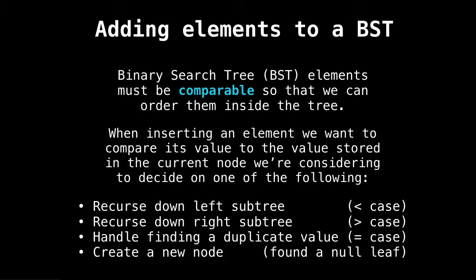So first, to add elements to our binary search tree, we need to make sure that the elements we're adding are actually comparable, meaning that we can order them in some way inside the tree. Meaning at every step, we know whether we need to place the element in the left subtree or the right subtree.